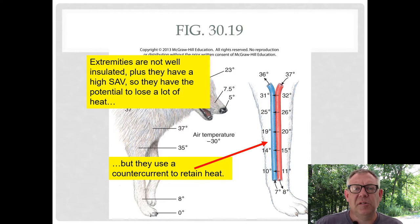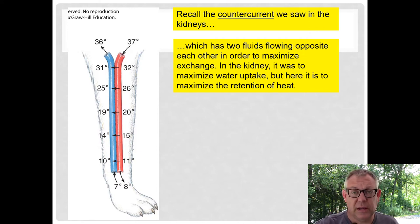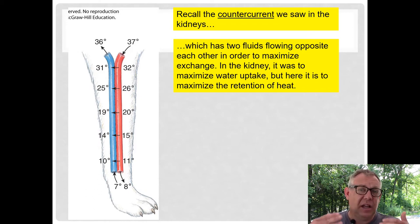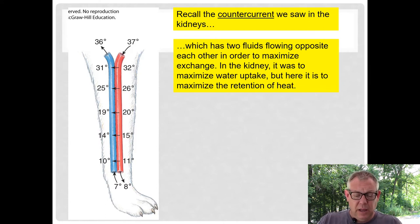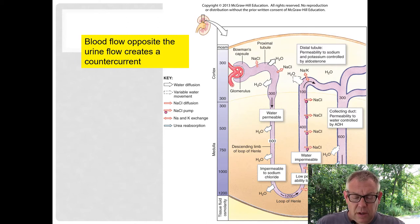The blood vessels are arranged in a counter-current fashion in order to retain heat. We've talked about counter-currents before — we talked about it with the kidneys, where you had two fluids flowing in opposite directions to each other. That allows you to maximize exchange between the two fluids. In the kidney it was to maximize water uptake into the blood. In this example, it's to maximize heat retention in the body. In the kidney diagram, blood flows in the opposite direction of the urine, setting up a counter-current which allows you to draw more water out of the urine and back into the blood.